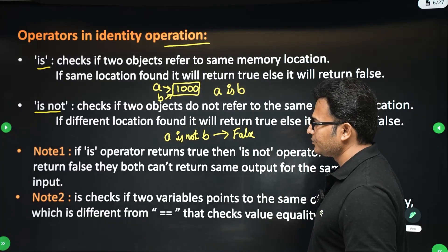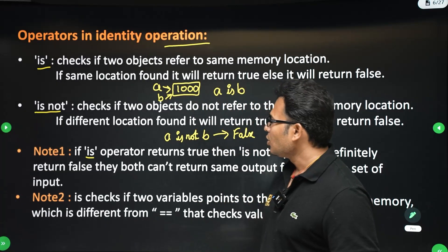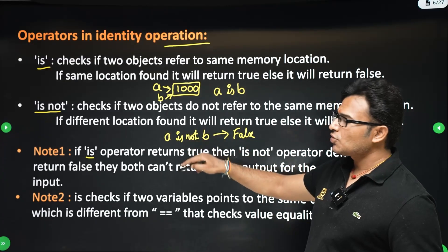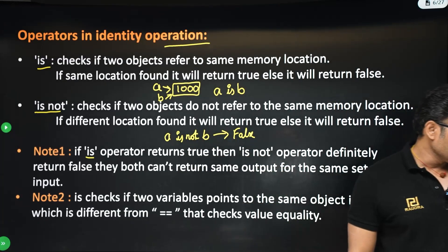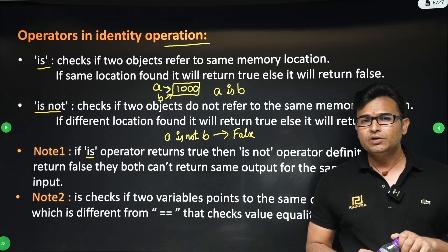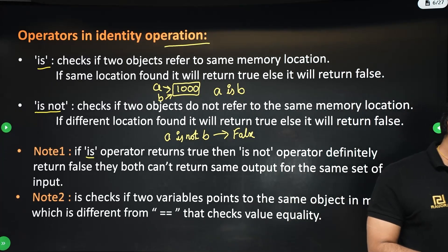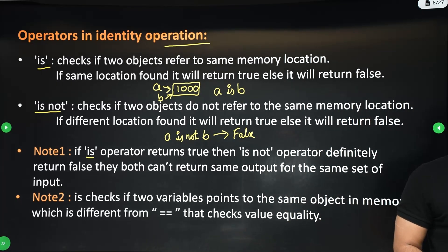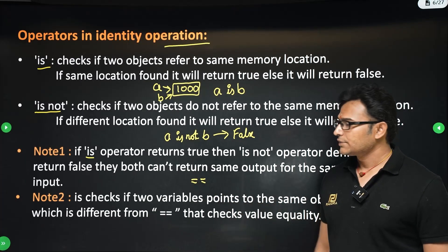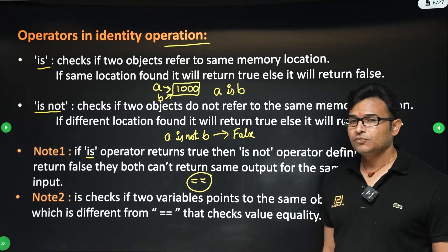'is' and 'is not' are complementary to each other. If 'is' is true, 'is not' will be false, and if 'is not' is true, 'is' will be false. Don't confuse yourself with the equal-to operator (==), which compares the value, not the address.